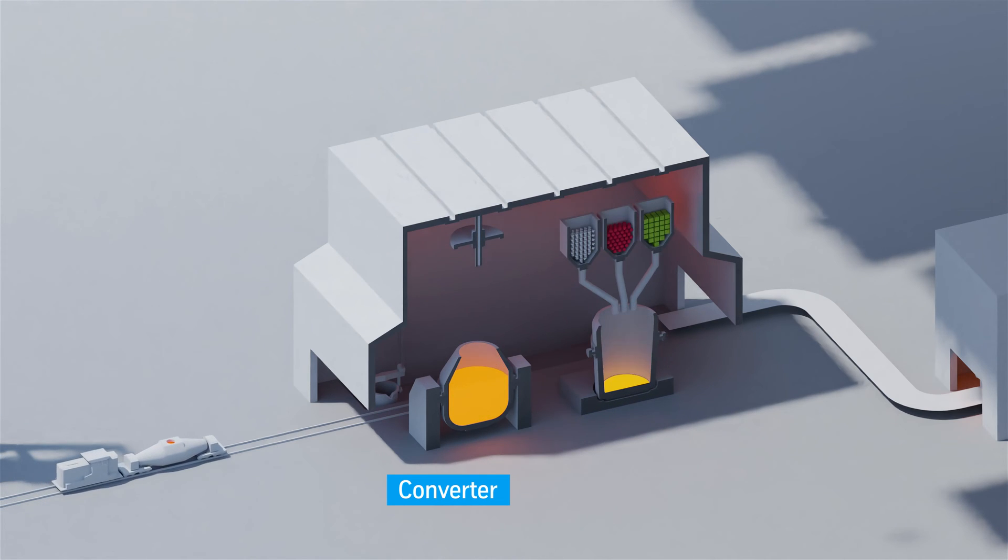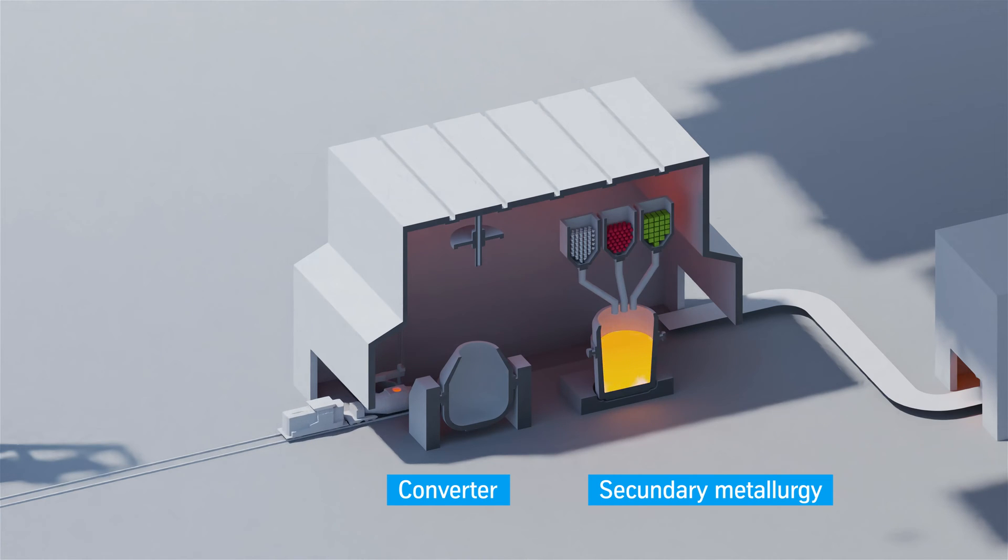However, one steel is not like another. In secondary metallurgy, the chemical composition of the liquid steel melt is adjusted. Small quantities of manganese and chromium are added to the steel—it is alloyed. This way more than 2,000 different steel grades can be produced.